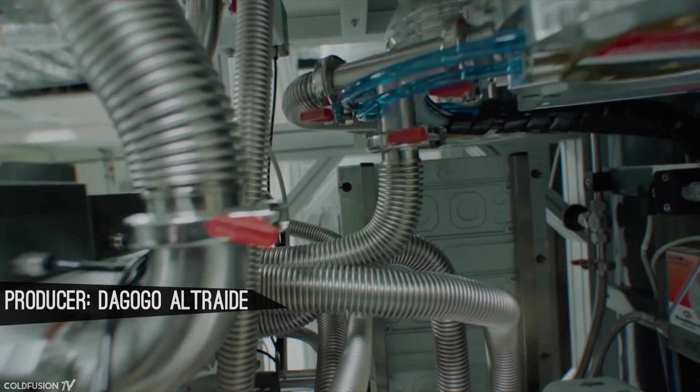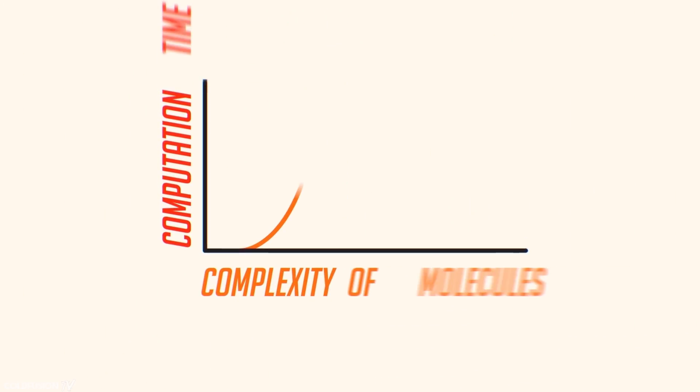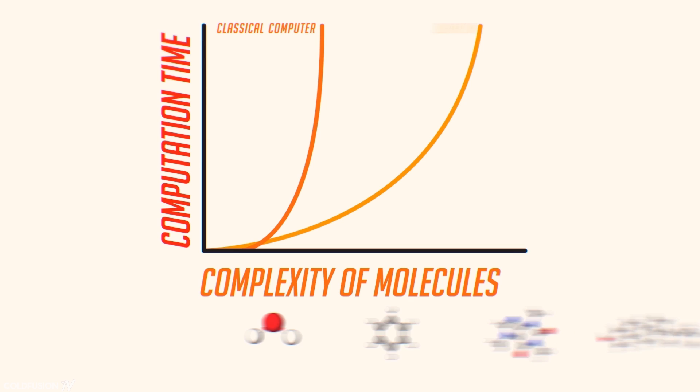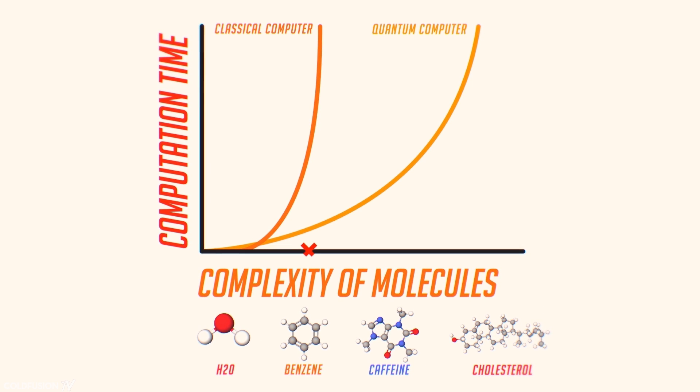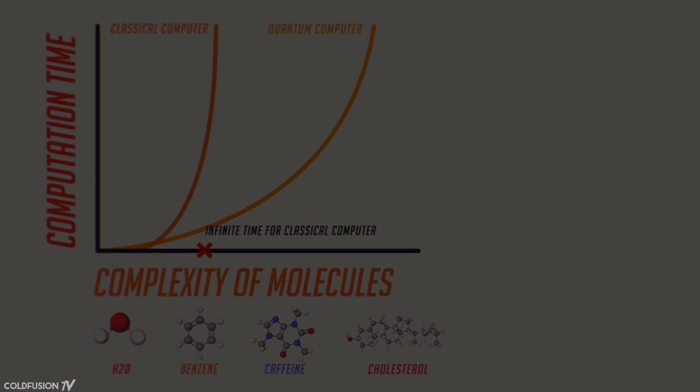So from the last video, we know that quantum computers can solve problems that would take infinitely long on a classical computer. Things such as modeling the brain and modeling weather systems, etc. But let's take a deeper look at how they work.